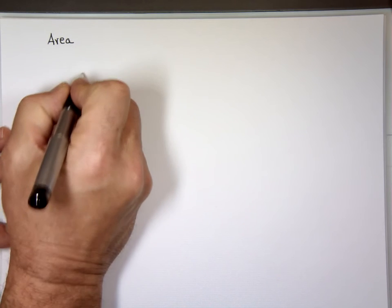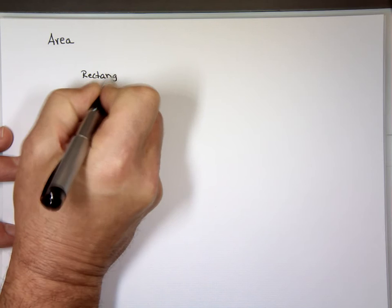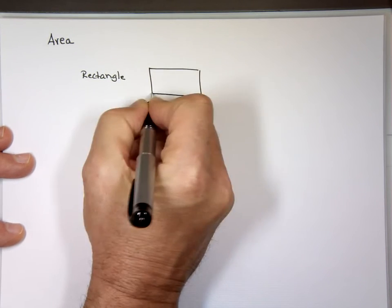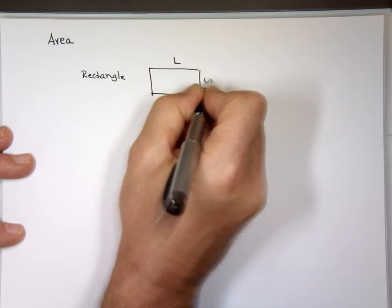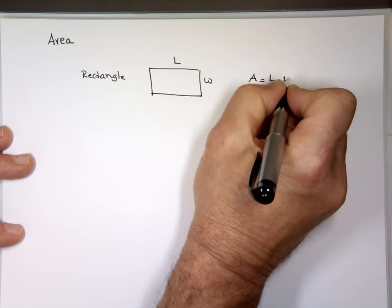Well, it is length times width if you have what? If you have a rectangular shape. So if we do have a rectangular shape with this as length and this as width, then the area of that will be length times width.